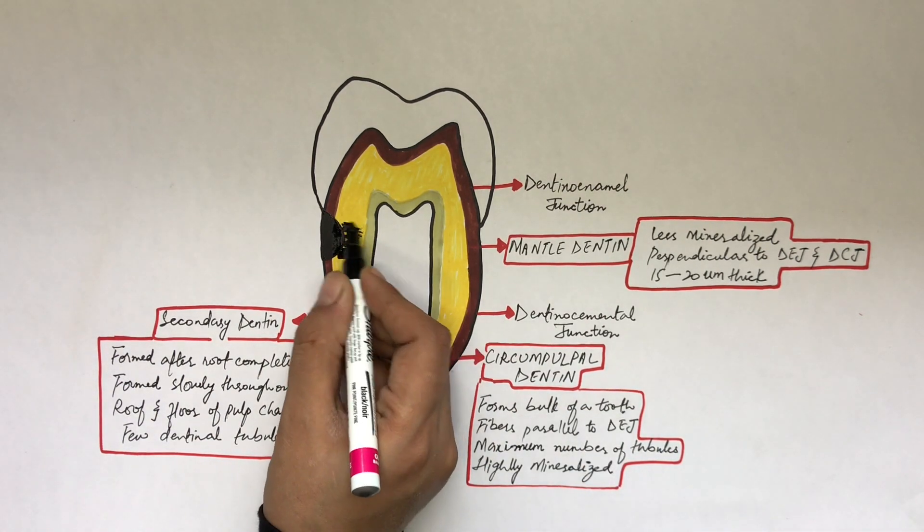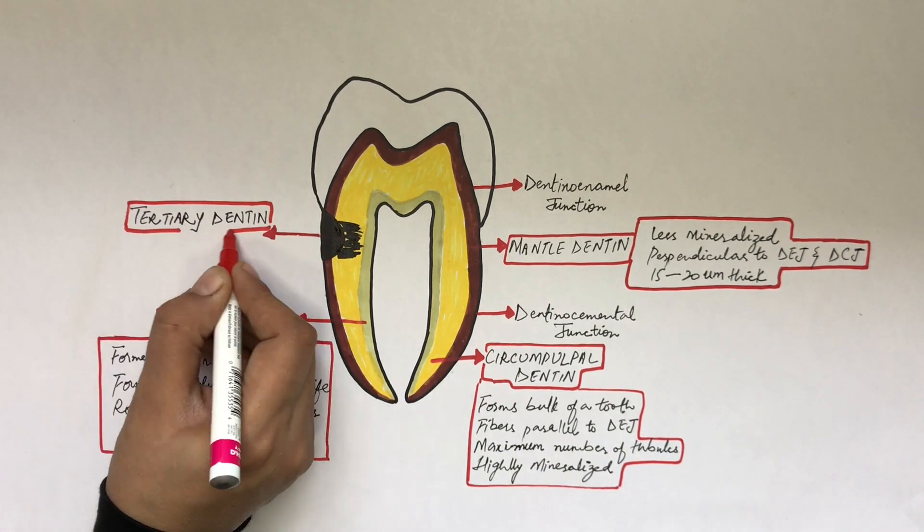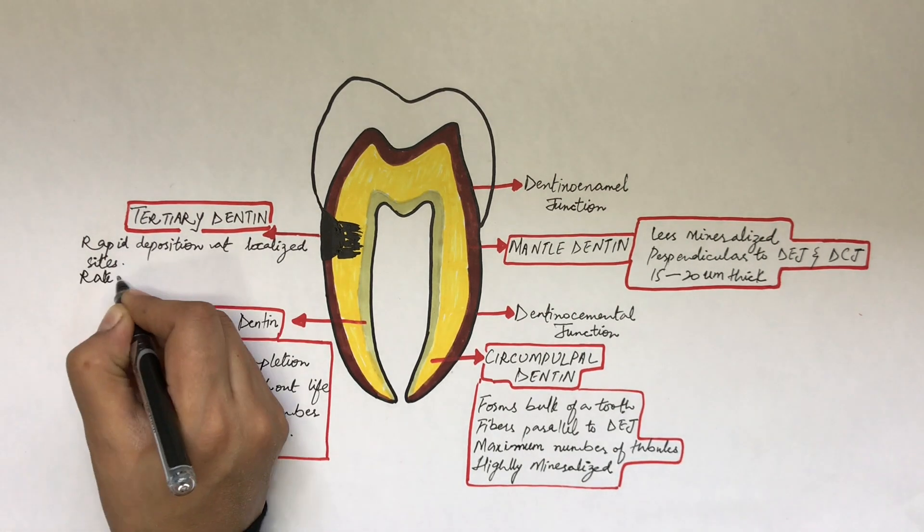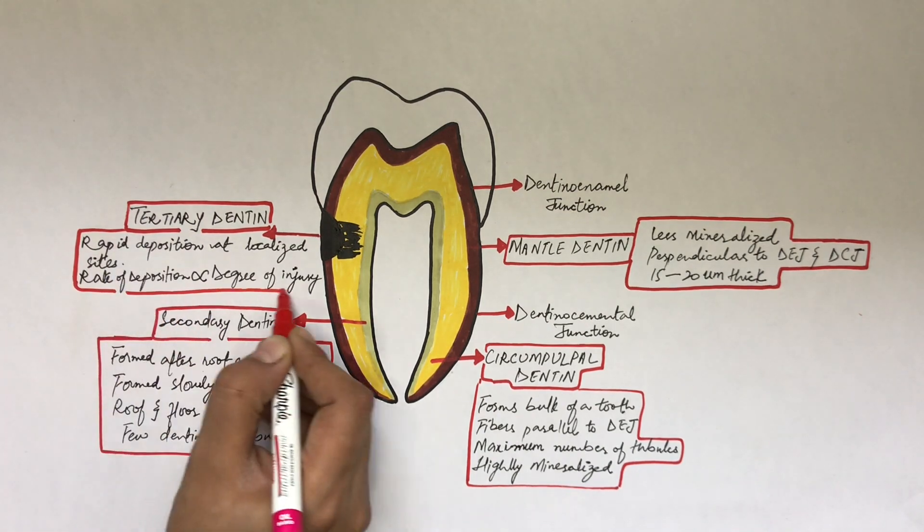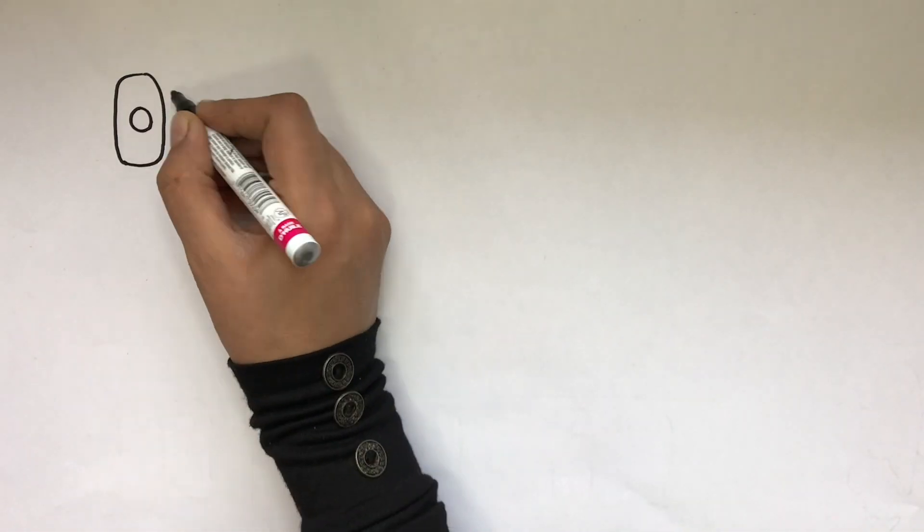The tertiary dentine deposits at localized sites after any injury, like caries or restorative procedures. Its rate of deposition is directly proportional to the degree of injury at that site. Let's move on to the next part of this video.